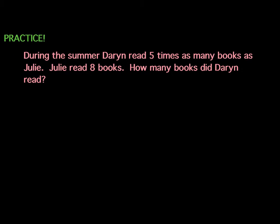So let's practice and talk about how we would go about solving some of these problems. The first problem that I'm going to have you look at states, During the summer, Darren read five times as many books as Julie. Julie read eight books. How many books did Darren read? So that sounds somewhat simple, or maybe it doesn't to some of you. It might be a little confusing. So let's try to look at some ways that we can think about how to solve this problem. Now, we know exactly how many books Julie read.